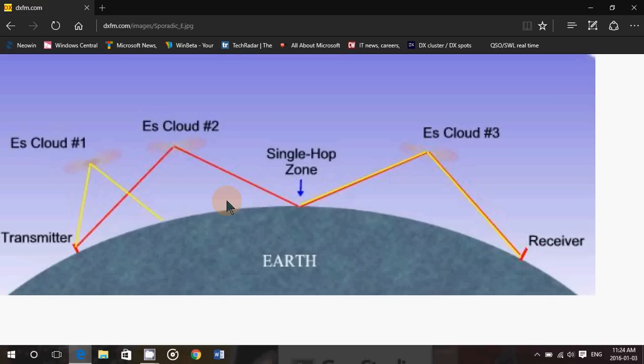Sporadic eSkip also has another kind of layer to it. If you are listening to higher frequencies, an amateur radio operator, for example, on 50 MHz, Sporadic eSkip - these clouds sometimes become so ionized that you can actually listen to Sporadic eSkip on 50 MHz.